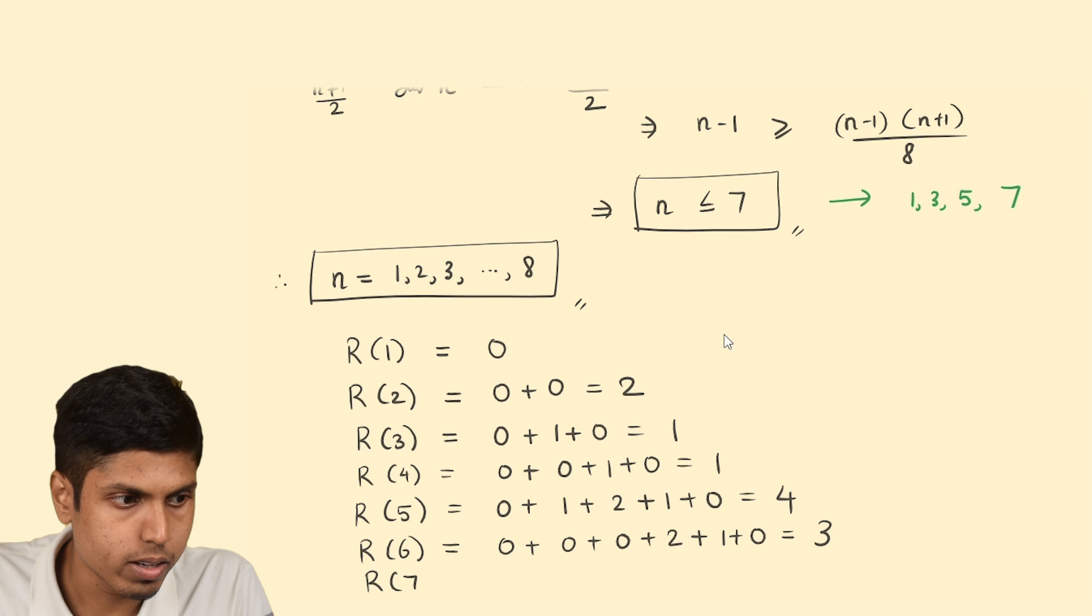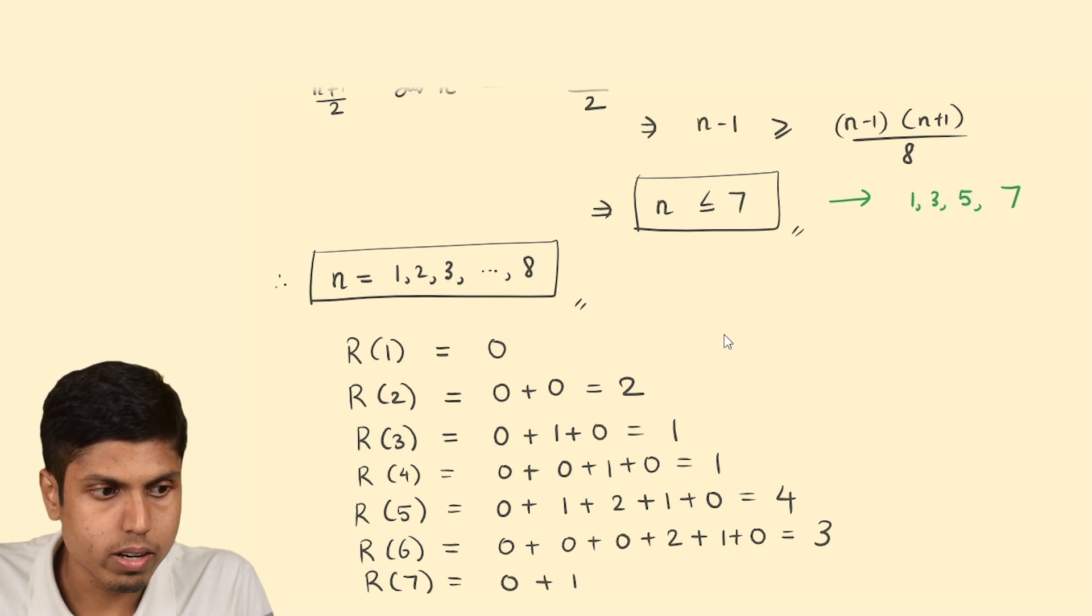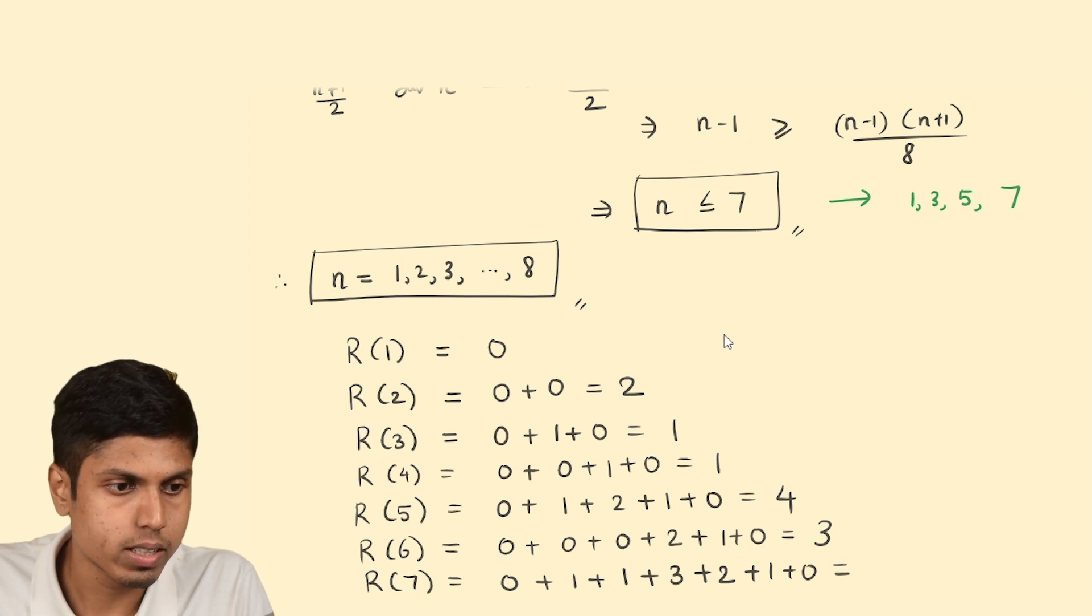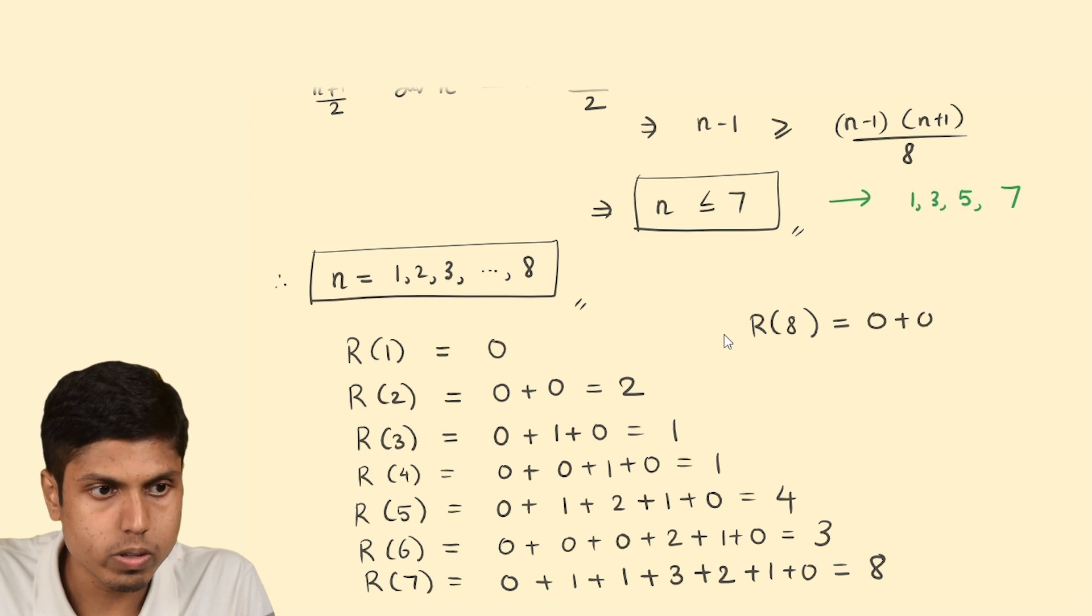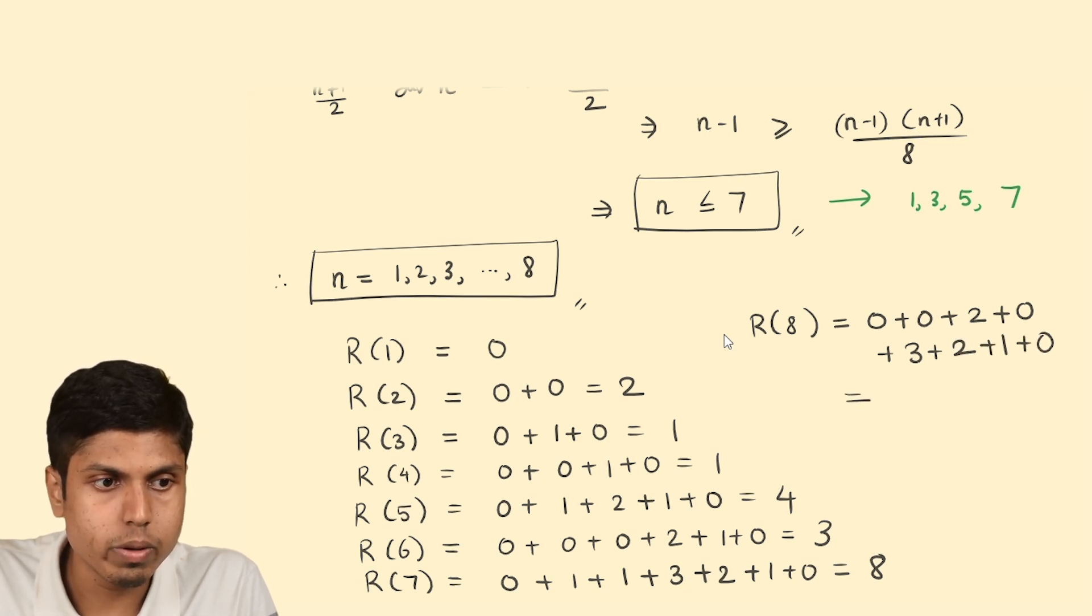R(7) would be 0 + 1 + 1 + 3 + 2 + 1 + 0, which is 8. And at last, R(8). R(8) would be 0 + 0 + 0 + when it is divided by 3 remainder is 2, when divided by 4 remainder is 0, by 5 remainder is 3, by 6 remainder is 2, by 7 remainder is 1, and by 8 remainder is 0. So this would be 8.